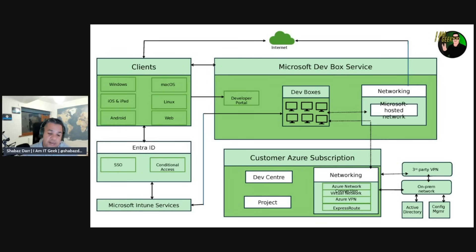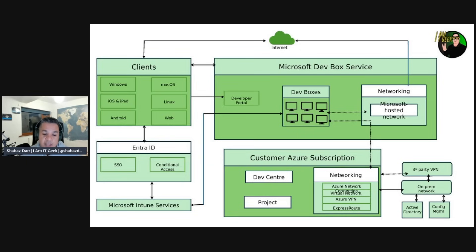Microsoft hosted network connections provide network connectivity in a SaaS manner — Microsoft manages the network infrastructure and related services on your Dev Boxes. Microsoft hosted networks are cloud-only deployments with support from Microsoft Entra join. This option is not compatible with the Microsoft Entra hybrid join model.